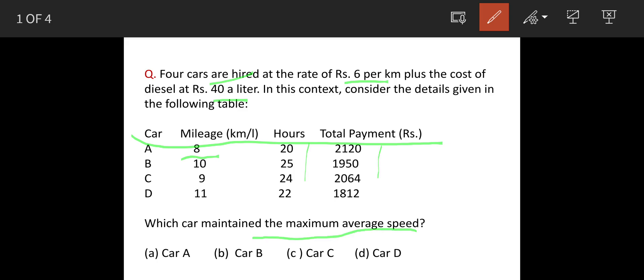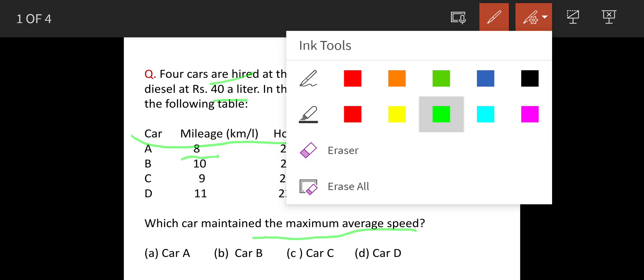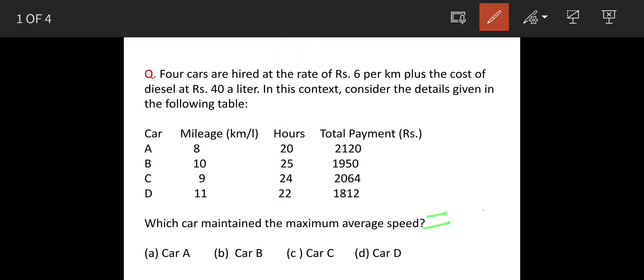So the question is which car maintained maximum average speed? Speed is distance upon time for all the cars. Time is given to us in hours, so distance we have to find out. Now how will you find out distance?